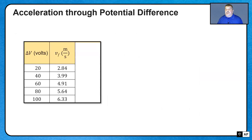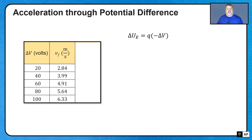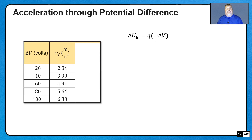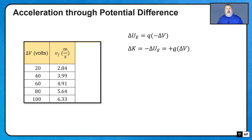Now I'd like to derive the relationship between the potential difference and the final speed of the particle. The change in potential energy of the charge-field system is q times the negative of the potential difference — it's going from the higher potential to the lower potential, so the change in potential is negative. The change in kinetic energy of the charged particle is the opposite of that change in potential energy, which is positive q times the potential difference.